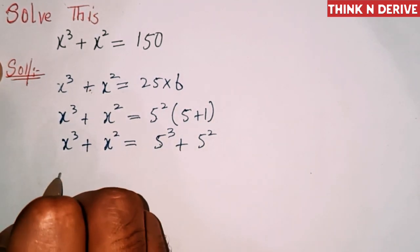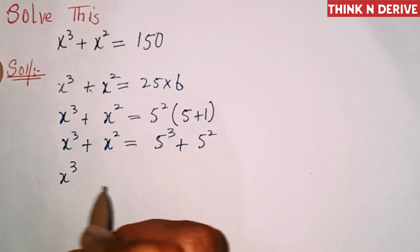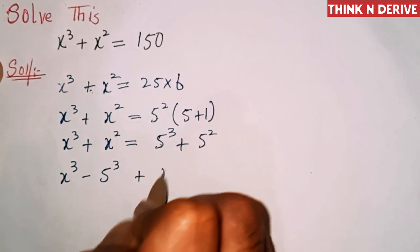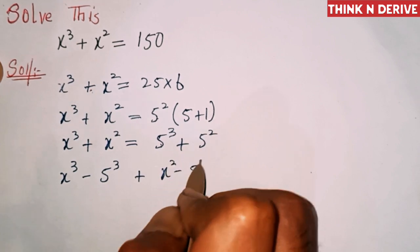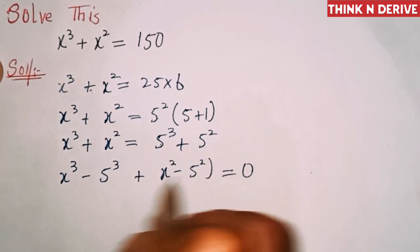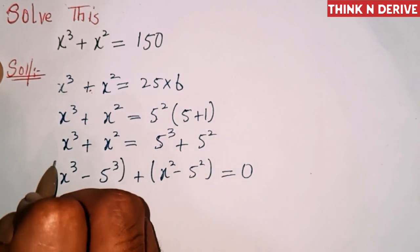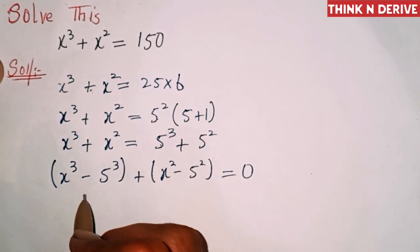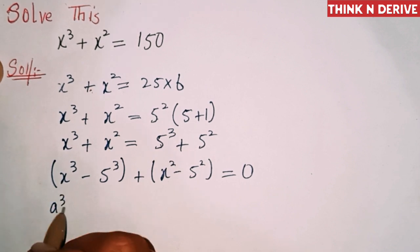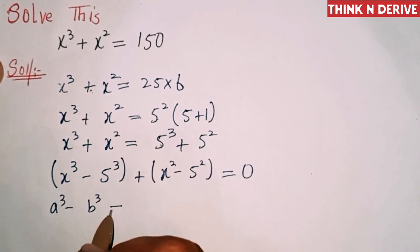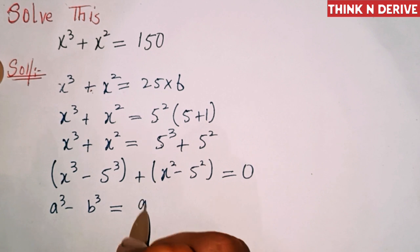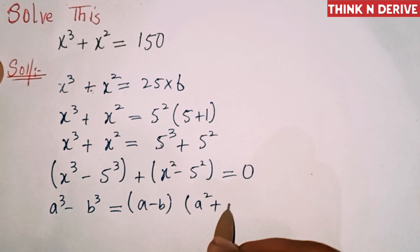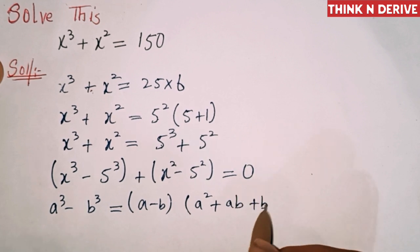Now we'll transpose 5³ + 5² to the left-hand side, so we get x³ - 5³ + x² - 5² = 0. We'll put these in brackets. Here we have two algebraic formulas: a³ - b³ = (a - b)(a² + ab + b²).